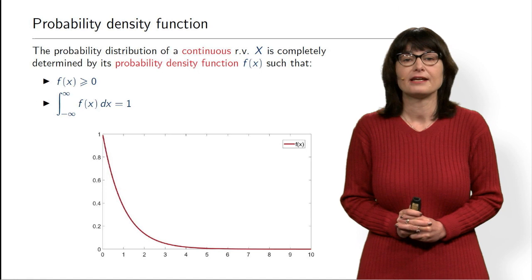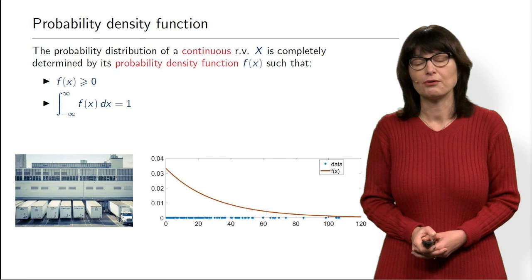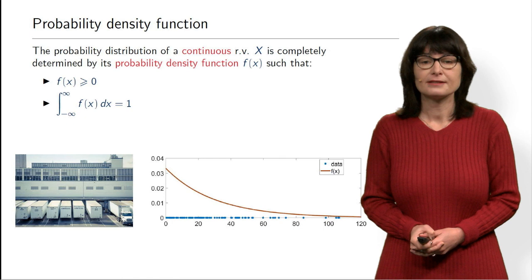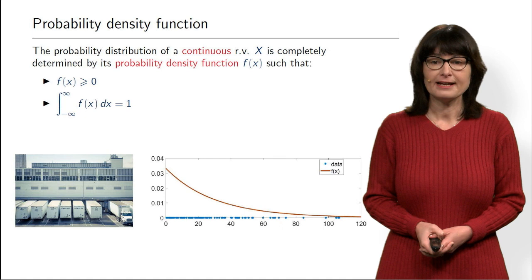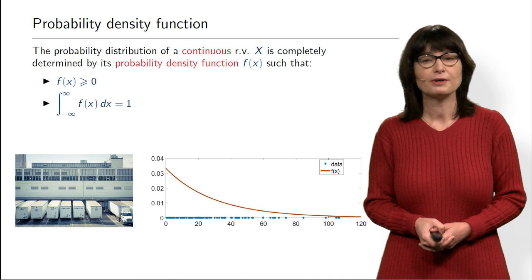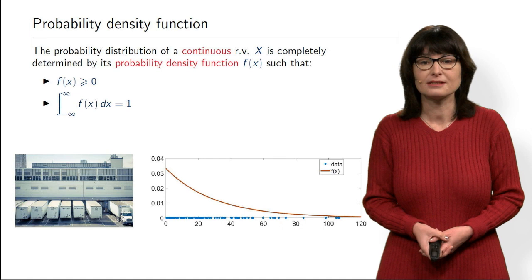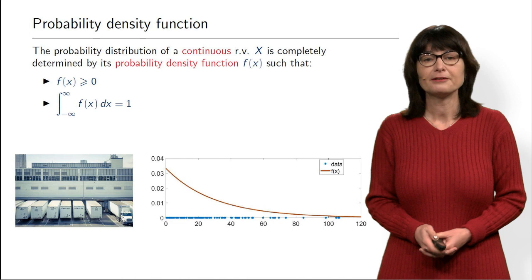How can you interpret this density function in real life? Assume your continuous random variable is the waiting time of a truck near a distribution facility, with an average waiting time of 30 minutes. The red line is the density and the blue dots are data from 100 recorded trucks. You can see that the density of data points is higher where the probability density function is larger — so you can take density very literally as the density of data points when you measure this data.